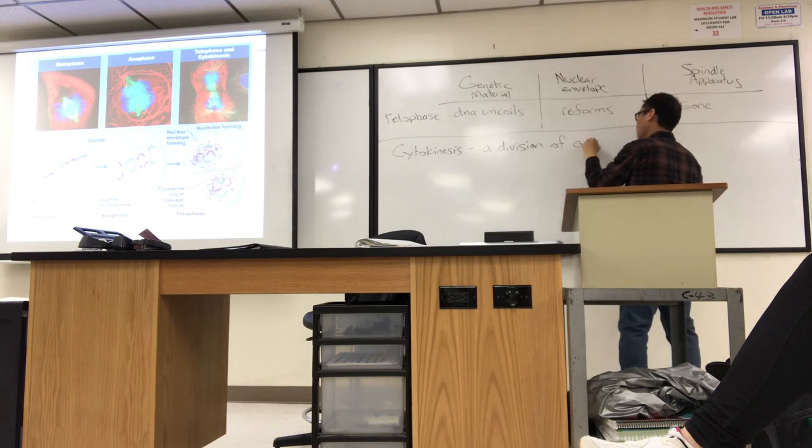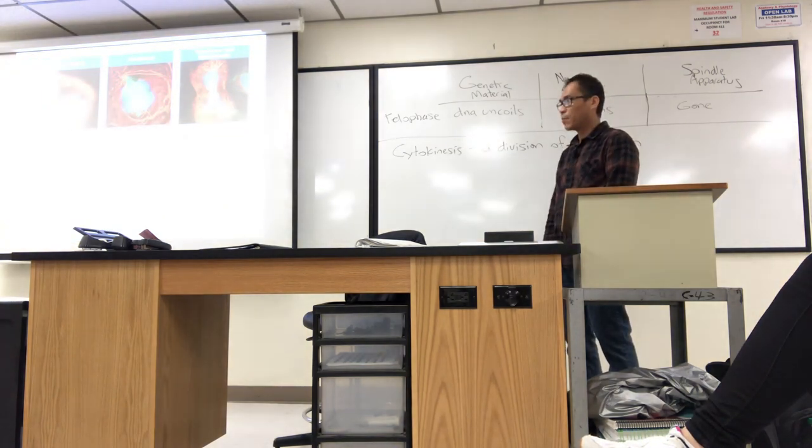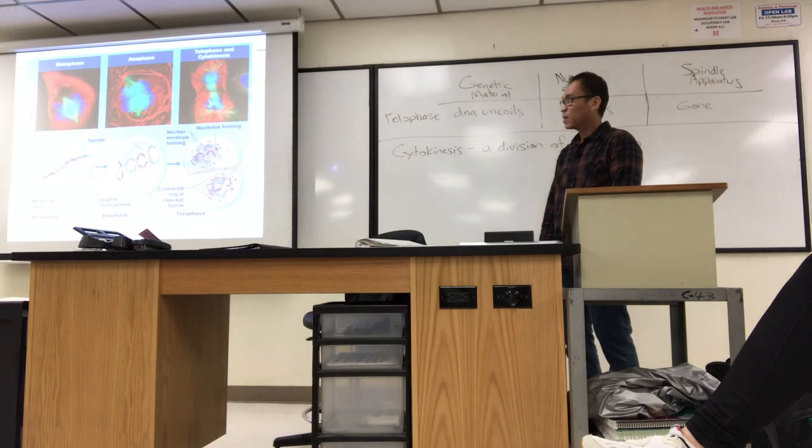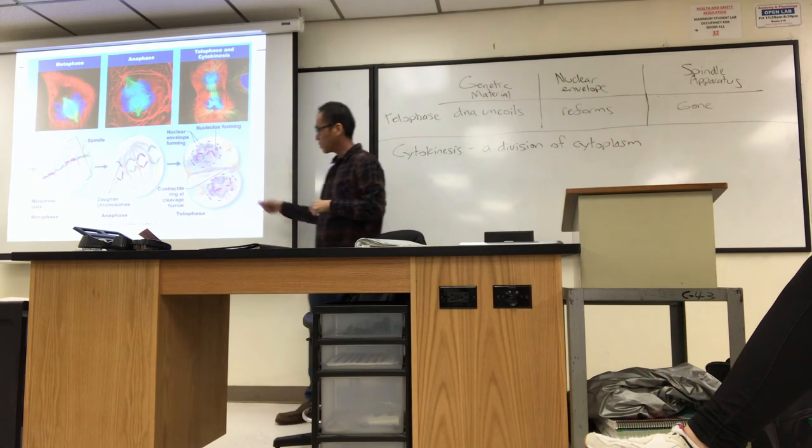The second phase of cell division is cytokinesis. Division of cytoplasm. Now, the division of cytoplasm, it could be equal. It could be unequal. It looks like in this example, it's an equal division of cytoplasm. But look for that cleavage furrow. The pinching off of the cell membrane will tell you you're in some sort of cytokinesis.